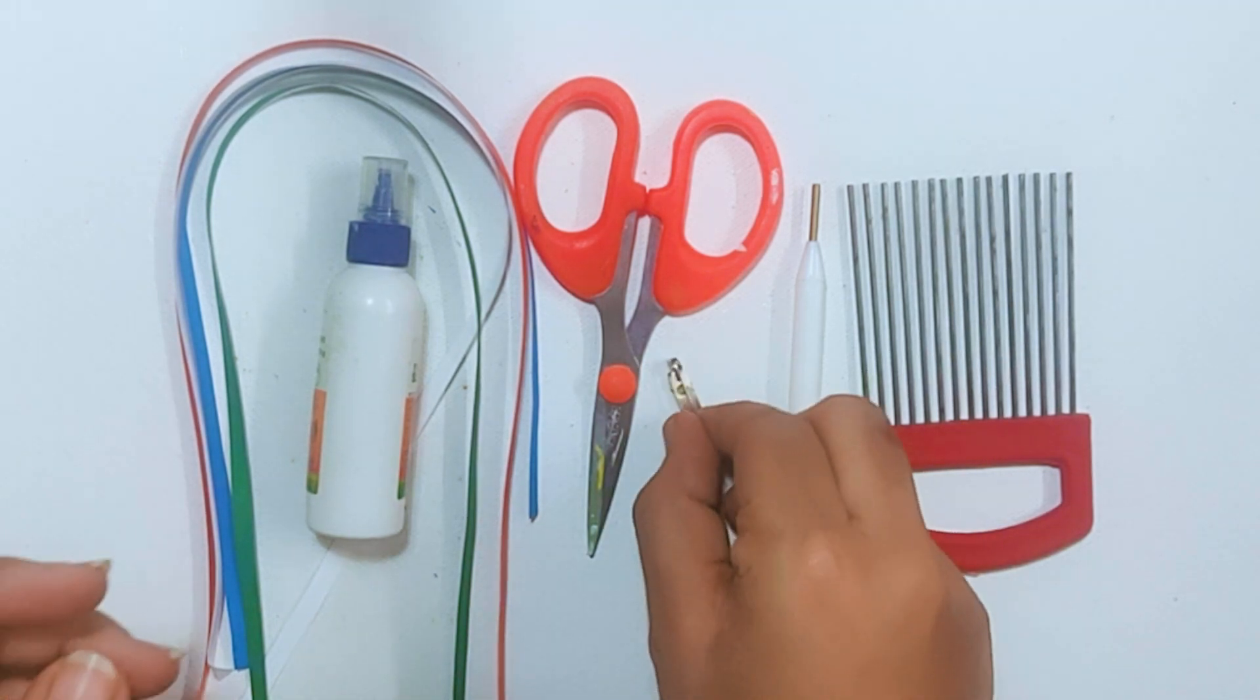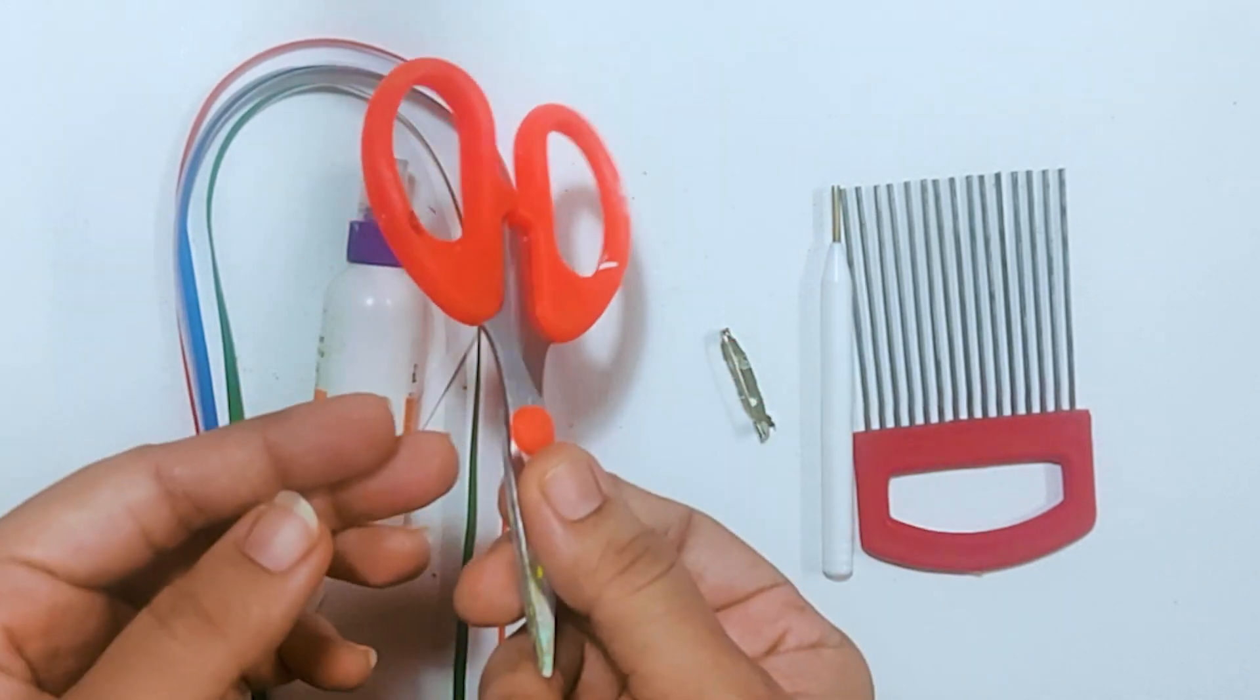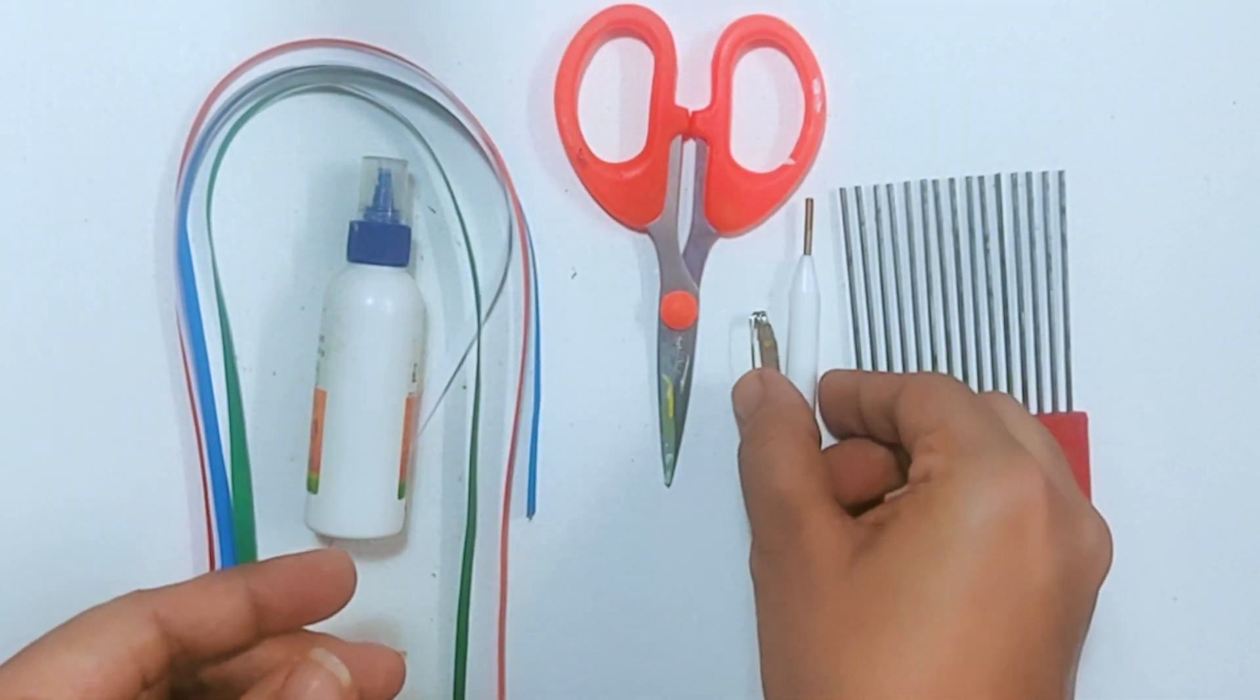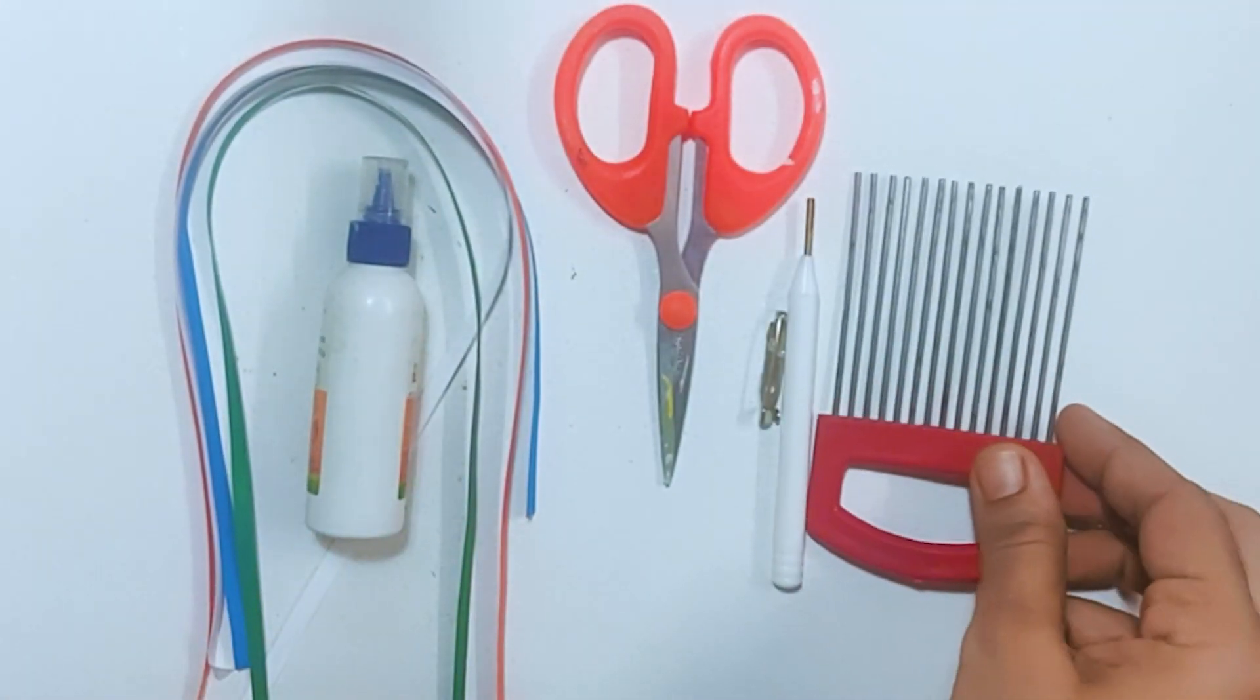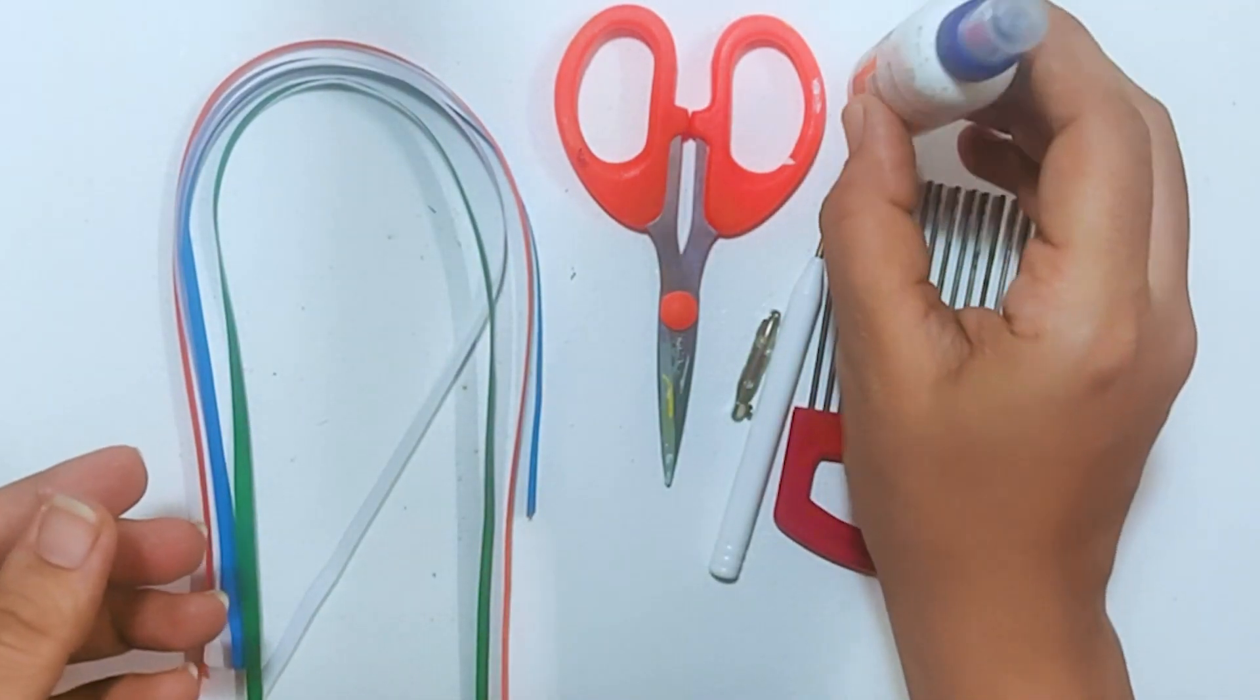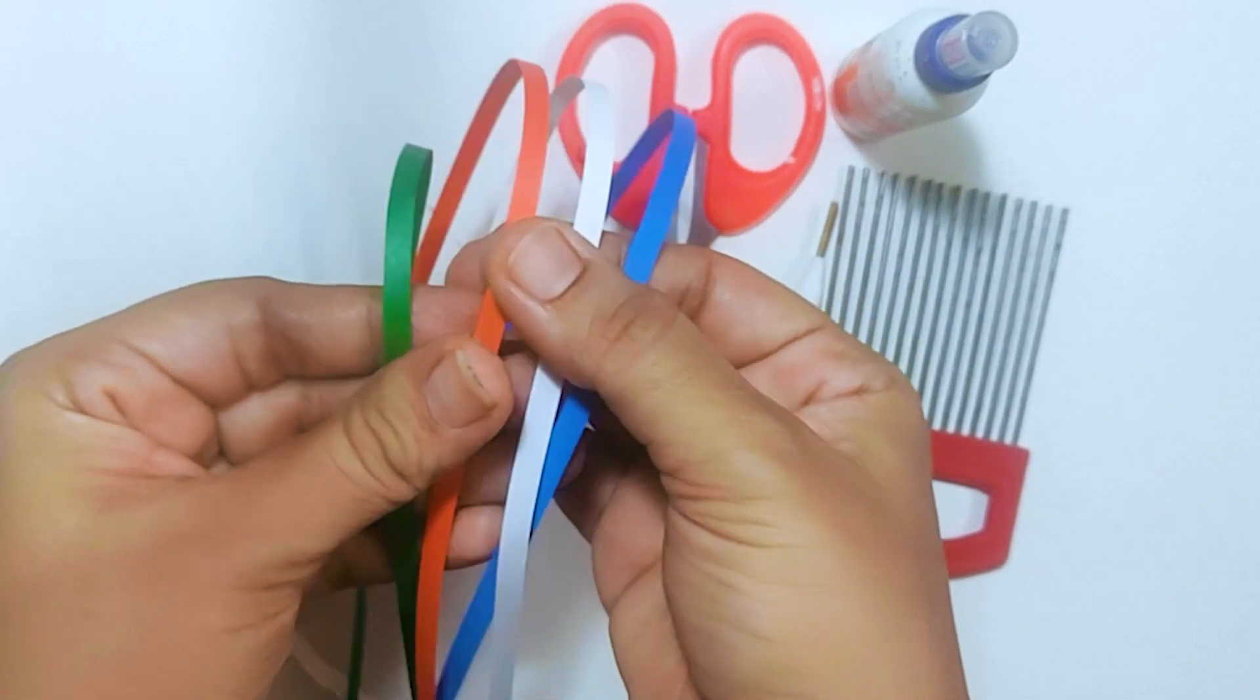Now we need a pin, a pair of scissors, the quilling tool, the quilling comb or a regular comb, some glue, and quilling strips in the colors blue, white, saffron, and green.